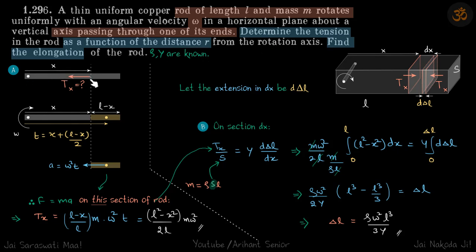Whatever is the tension, that tension is responsible for the centripetal acceleration of this part of the bar. By geometry, if the total length is L, and this is X, then this is L minus X. The center of mass of this part of the bar is at a distance X plus L minus X by 2, and its acceleration will be omega squared T.